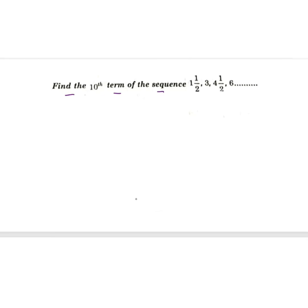Find the 10th term of the sequence 1½, 3, 4½, 6. They have given the sequence as 1, 1 by 2, 3, 4, 1 by 2 and 6. This will be first term, second term, third term, and fourth term. There are four terms in AP arithmetic progression and the nth term n is given as 10.